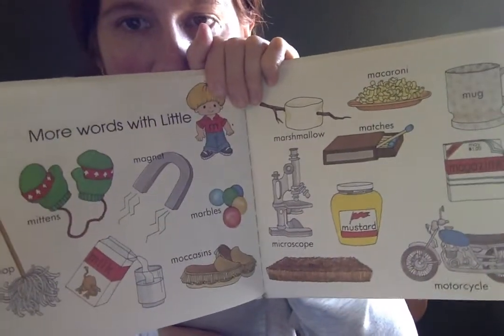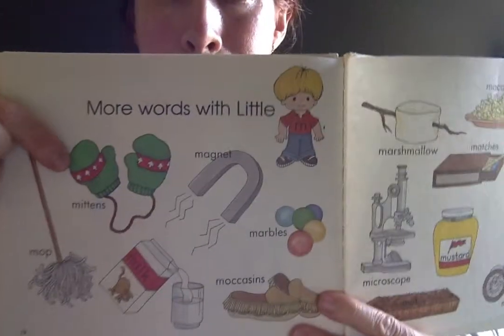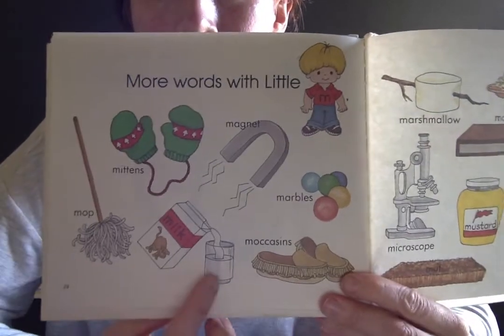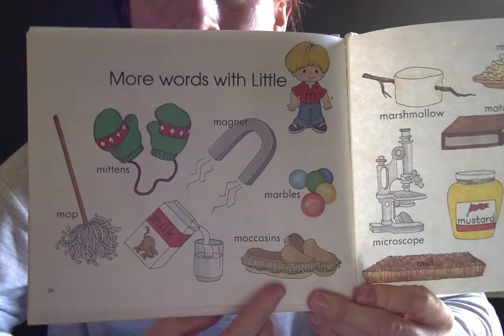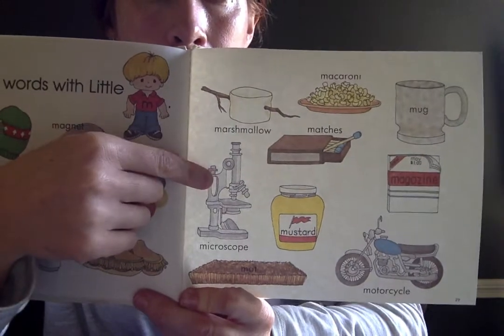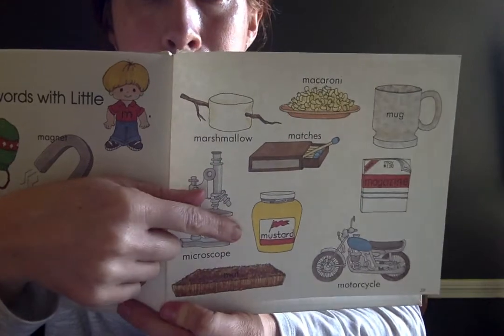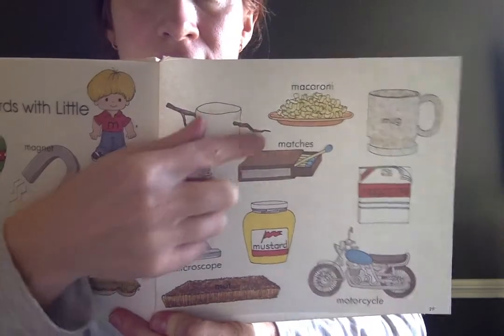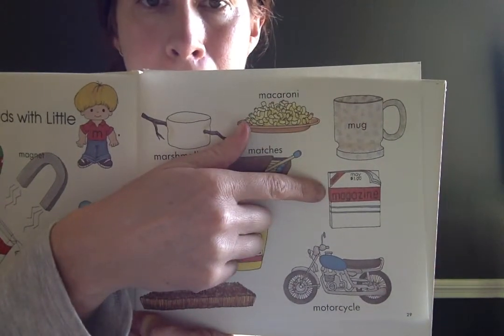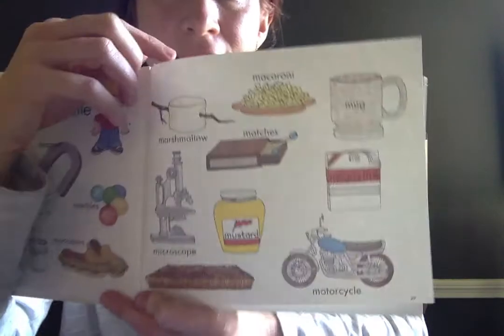Here are some more words with little M. You can say them with me if you know what they are. Matches, macaroni, mug, magazine, and what is this? Motorcycle. That's right.